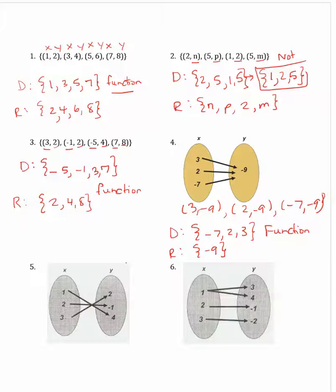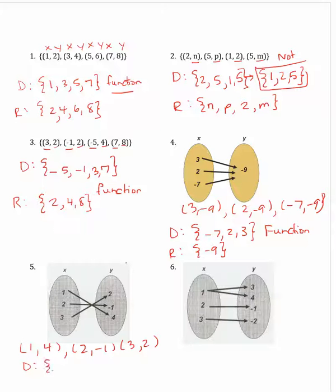Question 5 is a mapping. Let's go ahead and create the ordered pairs by following the arrows. The first ordered pair would be (1, 4), then we would have (2, negative 1), and (3, 2). So the domain of the function would be the set of the values 1, 2, 3. And the range would be the set of the values negative 1, 2, 4. Since the domain has all different x-coordinates, this is a function.